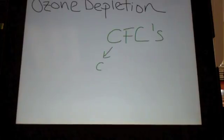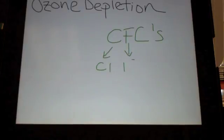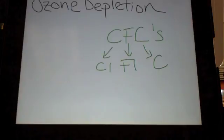CFCs are made up of chlorine, fluorine, and carbon. They're stable close to the earth's surface, but in about 10 to 20 years time, CFCs make their way into the stratosphere where they're not stable.